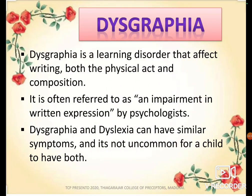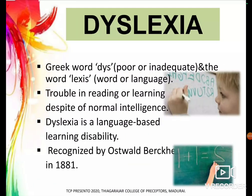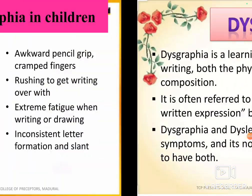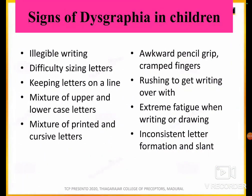The second learning disability is dysgraphia. Dysgraphia is related to writing. It is a learning disorder that affects writing — both the physical act and composition. It is often referred to by psychologists as an impairment in written expression. Dysgraphia and dyslexia share some common symptoms. Remember: dysgraphia is related to writing, dyslexia is related to reading.